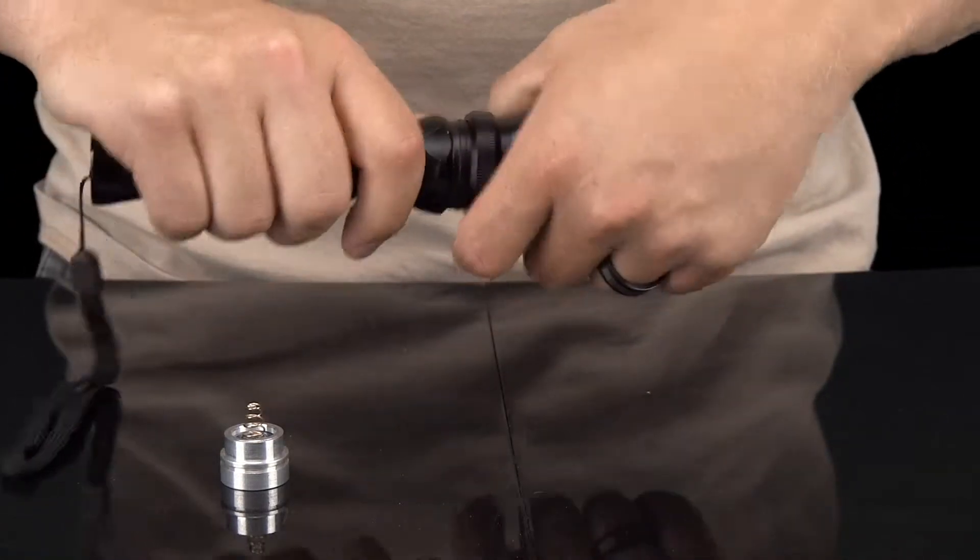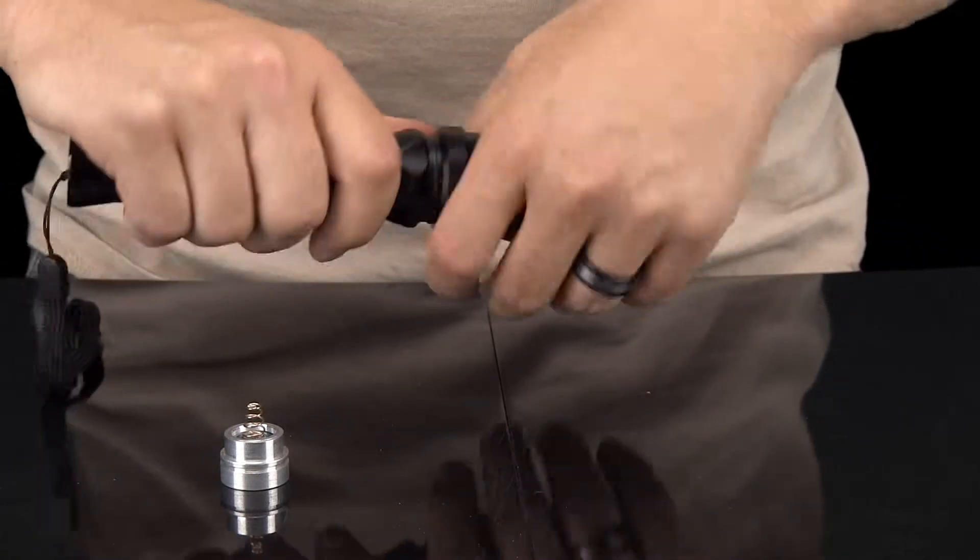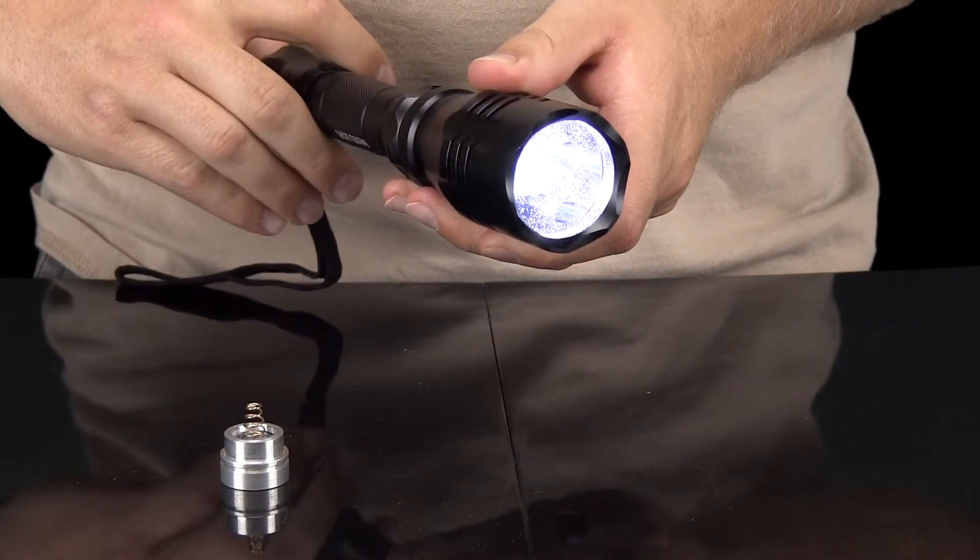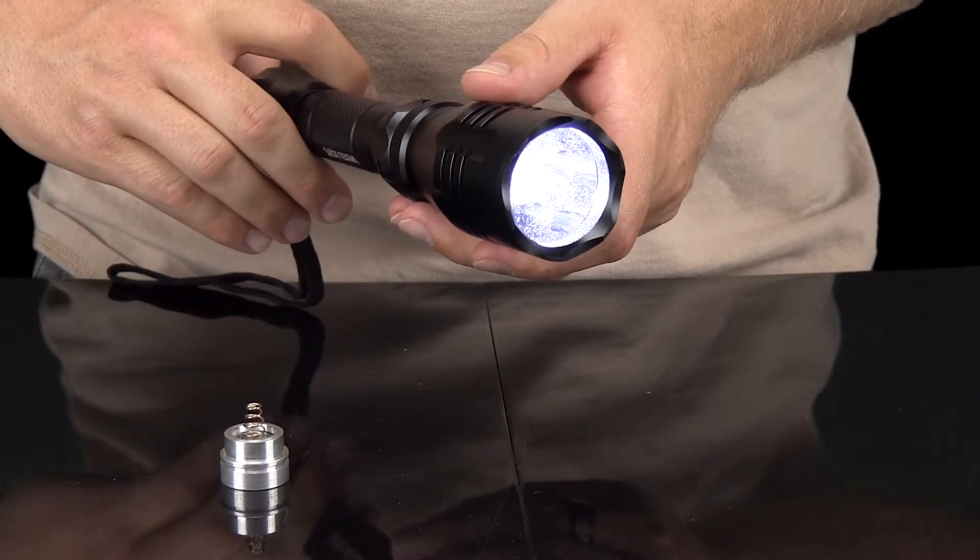Once the contact spring is installed correctly, you can reattach the bezel to the light housing. You are now ready to use your W400 light.